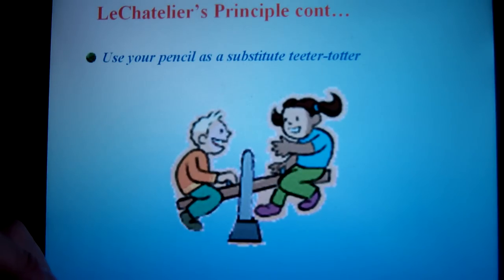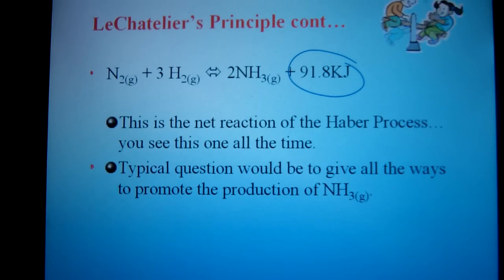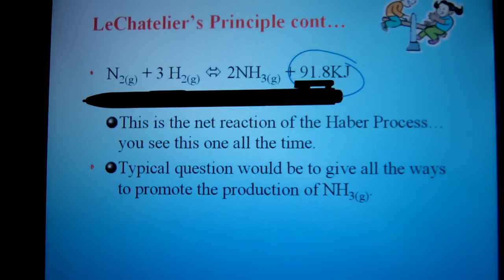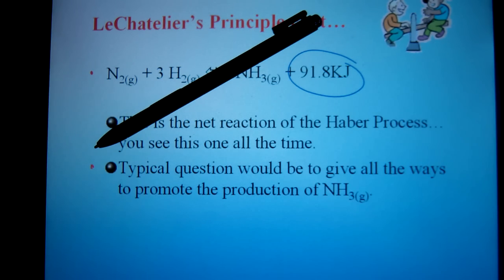The analogy I like to use is the teeter-totter. It's a very simple way of helping you predict shifts. In this example, we are trying to figure out all the different stresses that we could apply to this system to make more ammonia. First thing I need to decide is which way I'm trying to shift towards in the end. With the teeter-totter idea, whichever side of the teeter-totter is pointed up, that's the way you're shifting towards.